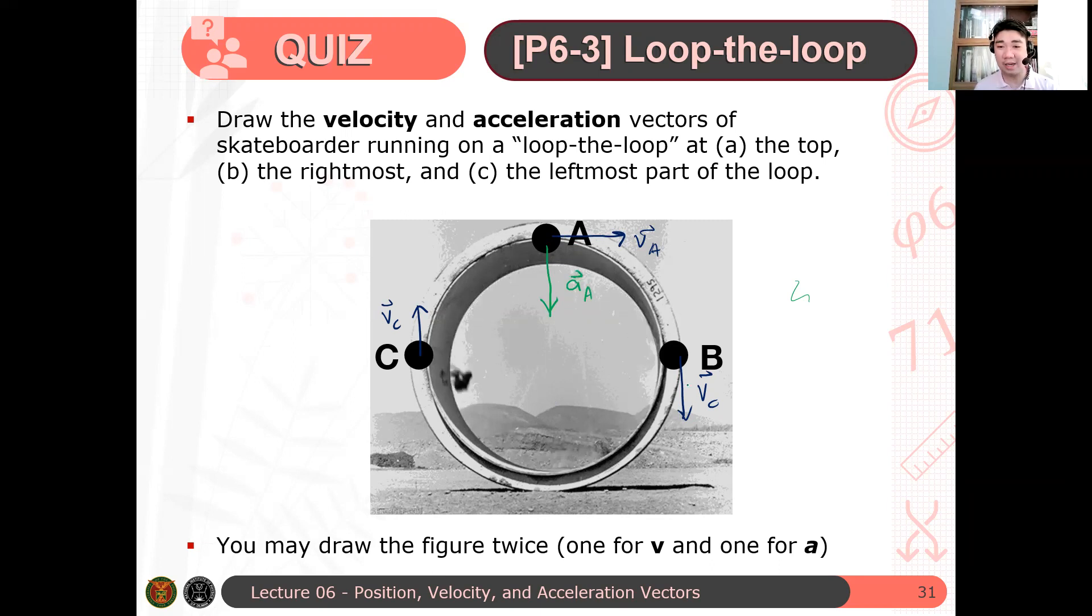At point B, ano nangyayari sa particle? Kasi since papunta siya sa downward, ano nangyayari sa kanya? Bumibilis siya, di ba? Bumibilis. Therefore, anong masasabi mo sa component acceleration parallel to the velocity? Is it anti-parallel or parallel? Parallel.